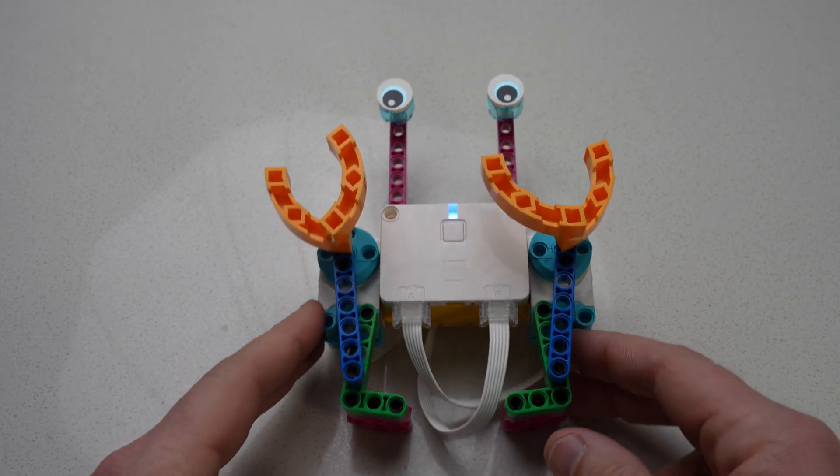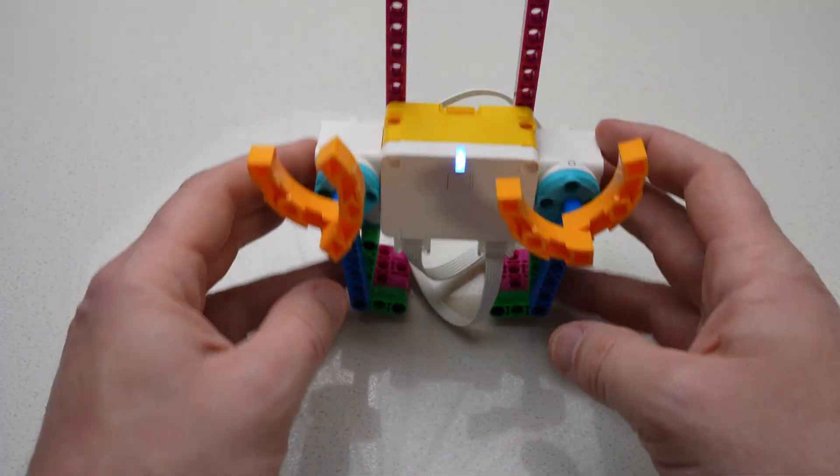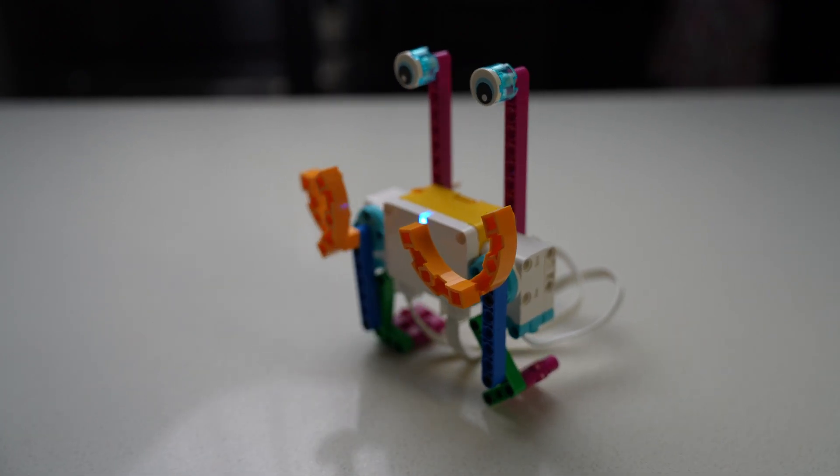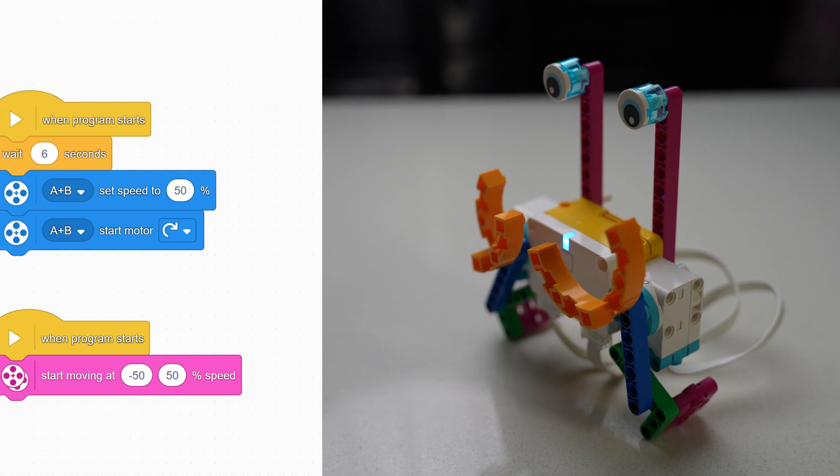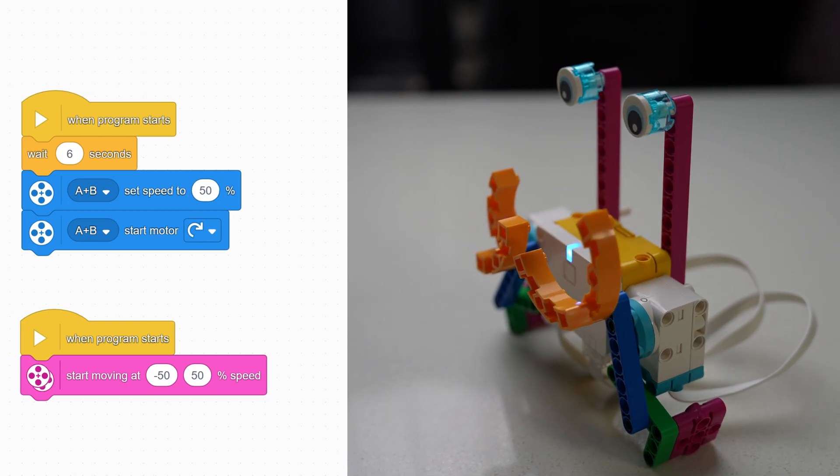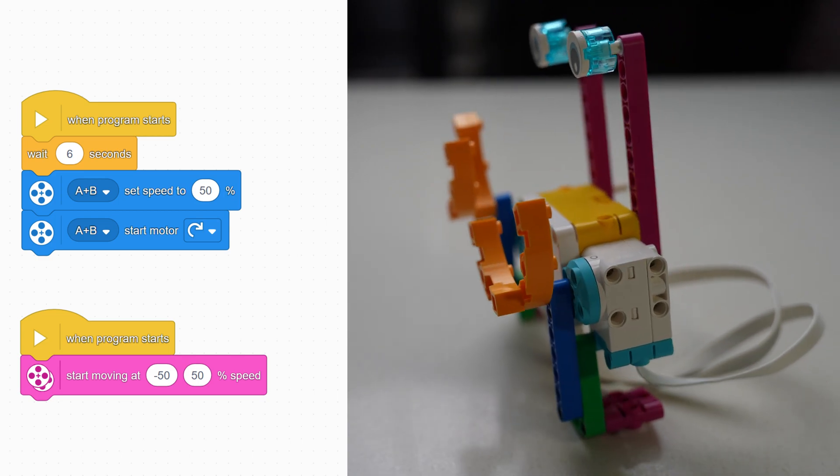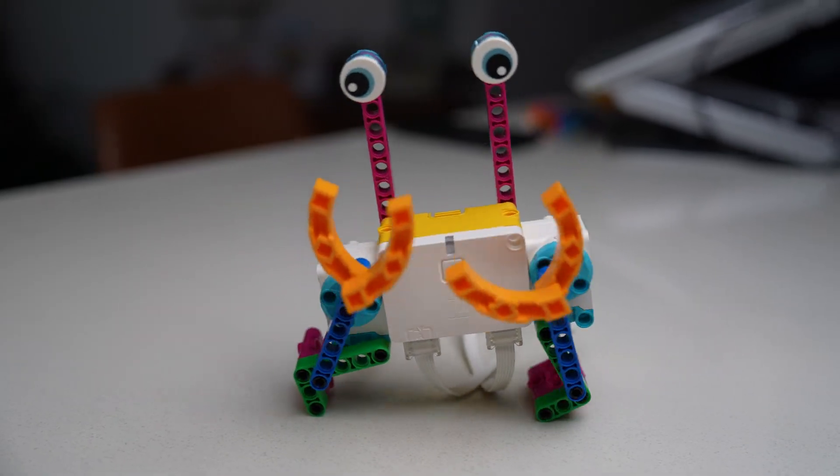We have completed our bot, and so now it's time to stand the crab up on his legs and send it some code that tells those motors to rotate. Here are two options to make your crab move. One set of blocks will make your crab walk in a straight line across a table or the floor. The other one will have your crab spinning around in circles.